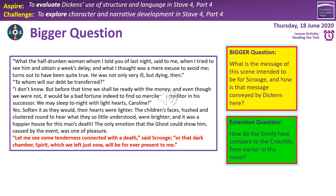We're on our bigger question for today. The final bit of the extract is on the left-hand side; on the right-hand side in the yellow box is the question: what is the message of this scene intended to be for Scrooge, and how is that message conveyed by Dickens here? And then in the green box: how did the family here compare to the Cratchits from earlier in the novel? Have a read through, reflect, decide what you think about those two questions, then press play and I'll have a quick discussion about how we can interpret this.